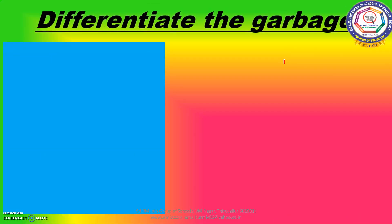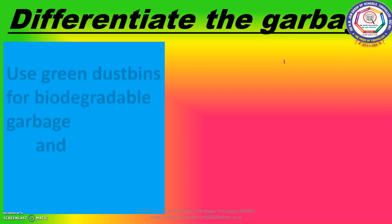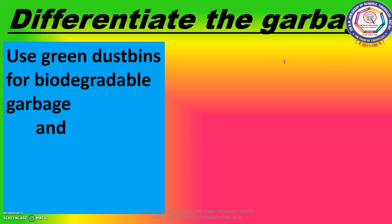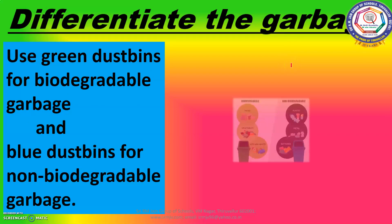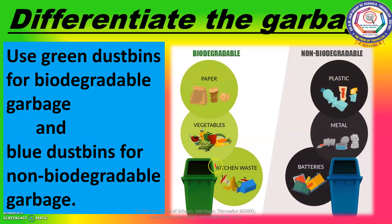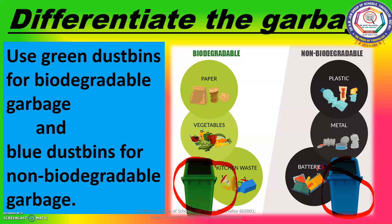Differentiate the garbage. The blue and green dustbins are used to segregate two different kinds of waste. The green bin is for wet waste, while the blue bin is for dry waste. Waste segregation is done to easily separate the waste based on their process of recycling.